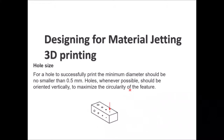If you are planning to design holes, as discussed in other 3D printing design guidelines before, the minimum diameter should be at least 0.5 millimeters or higher for a successful print. The hole should also be oriented vertically with respect to the build direction of the nozzle, so that you can maximize the circularity of that feature.